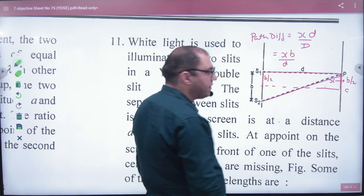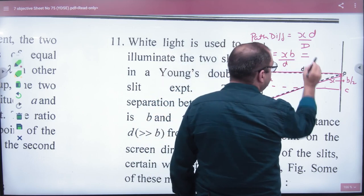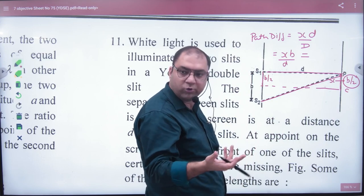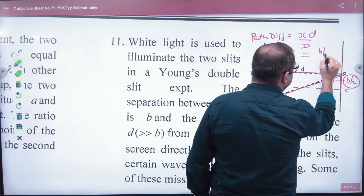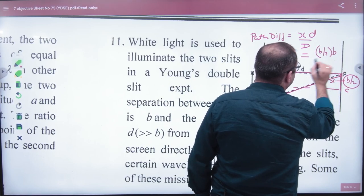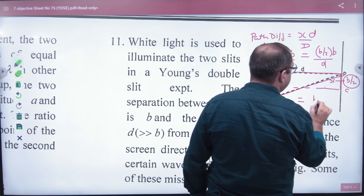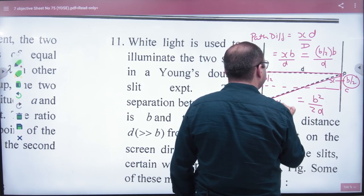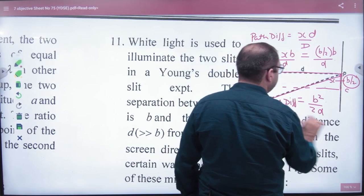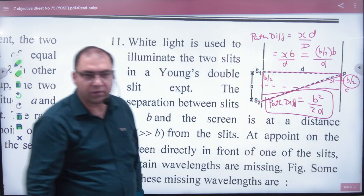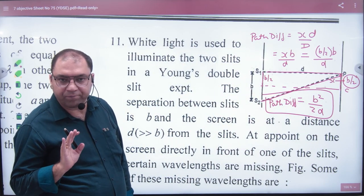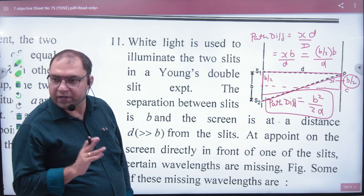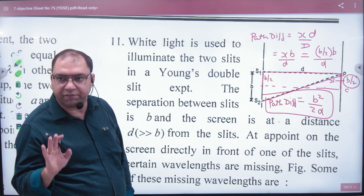Now the biggest thing in this case is x is given to you as b/2. So when you put b/2, then b/2 times d divided by D equals b²/2D. This is the path difference. So this value of path difference is coming. Now this path difference should equal what?